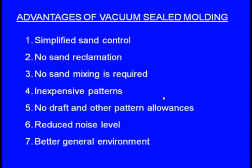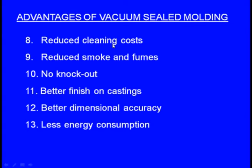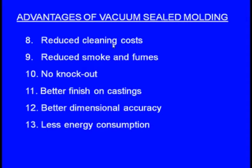Additional advantages: reduced cleaning costs — in sand casting, clay, water, and additives create a dirty film on the casting that must be cleaned, but in the V process the casting is very clean. Reduced smoke and fumes — in sand casting, moisture in the mould turns into vapour when molten metal is poured, causing inconvenience to operators, but this does not arise here. No knockout process — in sand casting, physical effort or machines are needed to break the mould after solidification, but here that is not required. Better finish on castings, better dimensional accuracy, and less energy consumption.